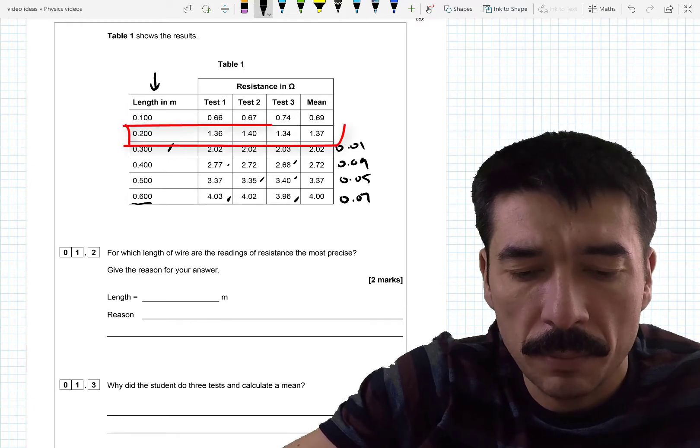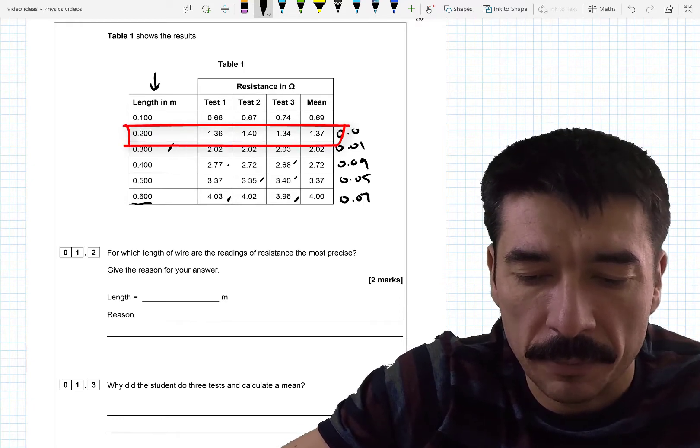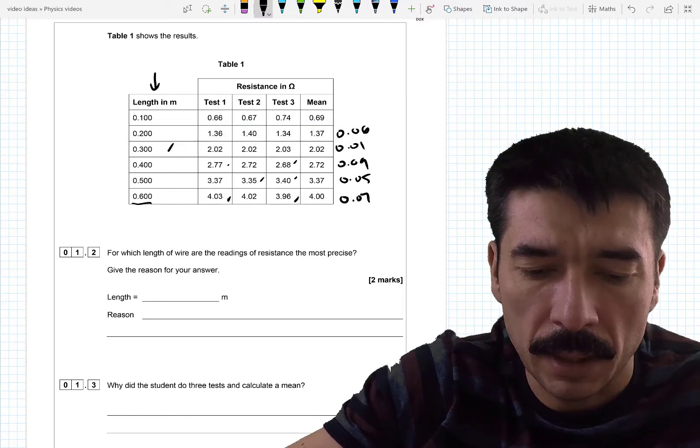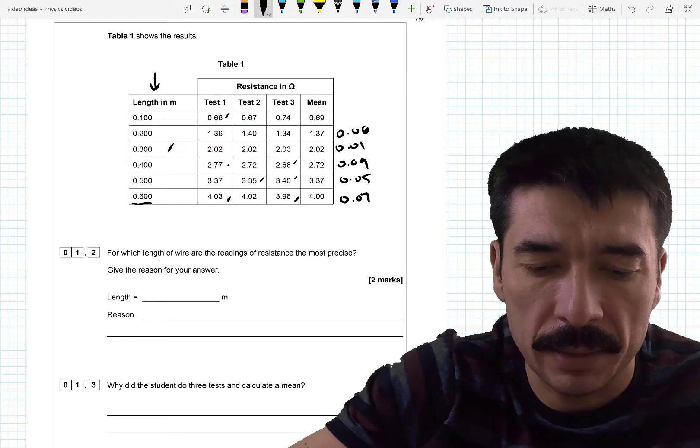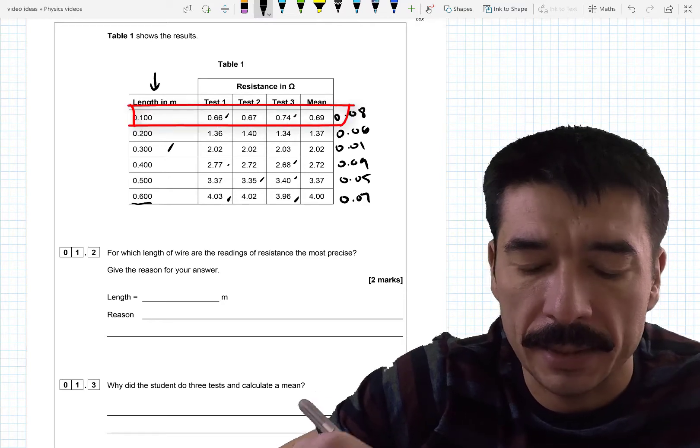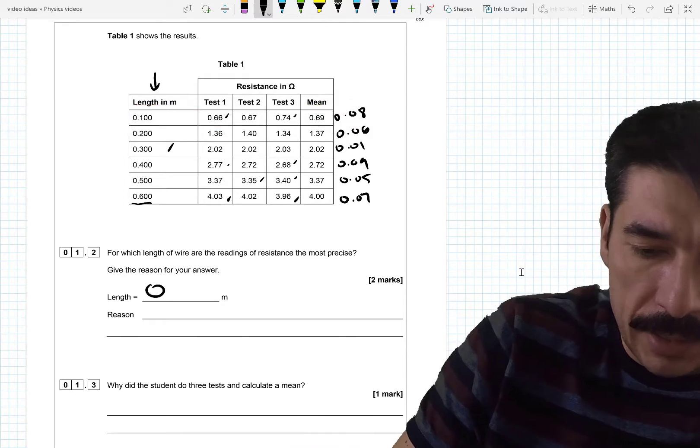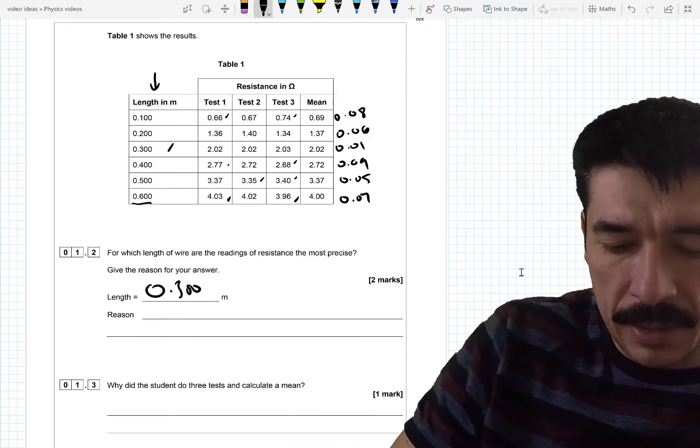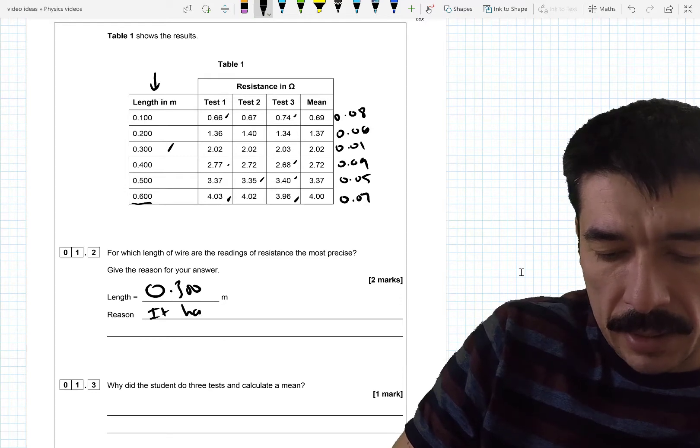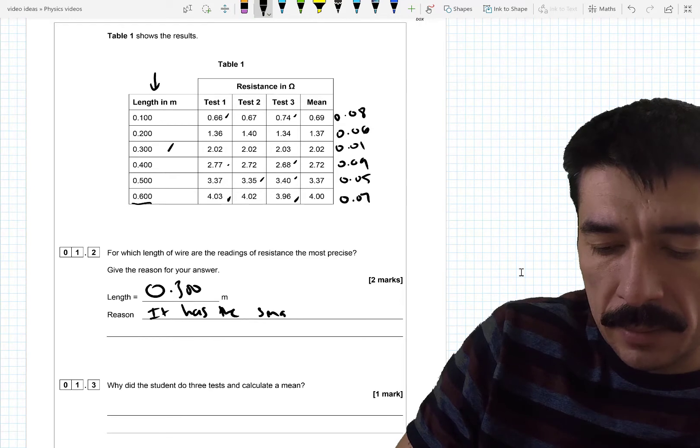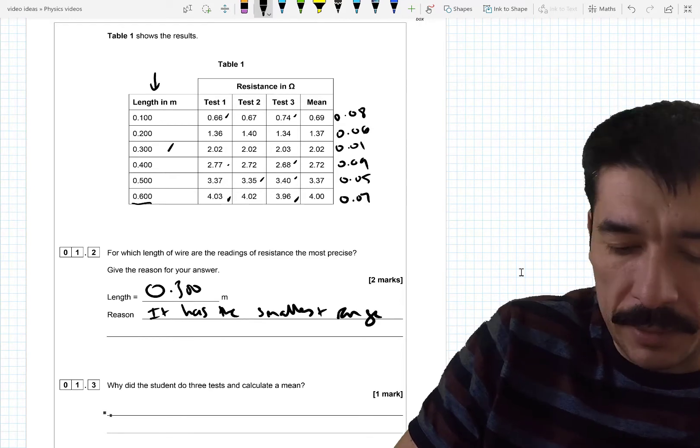1.34 to 1.40. So this one is a spread of 0.06. And this one has a spread because the lowest value and the highest value. The spread is 0.08. So I'm going to say 0.300. And the reason is because it has the smallest range of values.